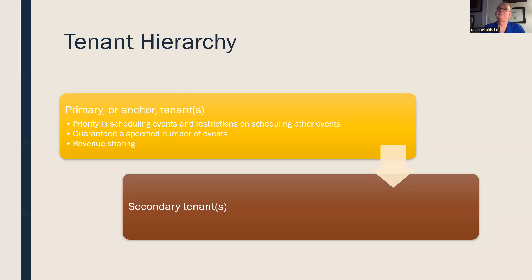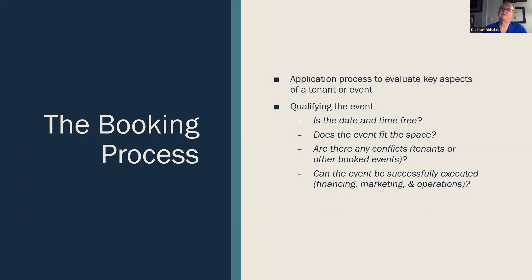The last thing to look at in the booking process is tenant hierarchy. These are buildings that have primary tenants — sometimes more than one. For instance, a stadium with two football teams has two primary tenants who get priority in scheduling. In an arena, you might have a primary basketball team as anchor tenant with secondary tenants of hockey and college basketball. Any extra events you schedule have to work around both primary and secondary tenants.